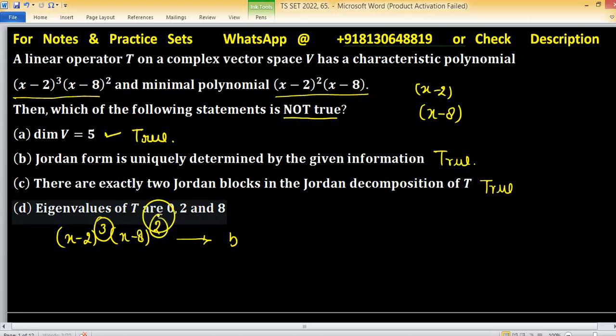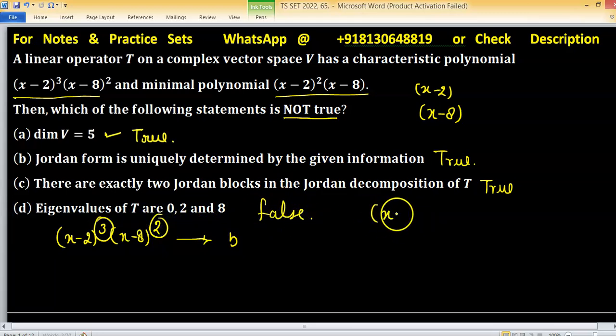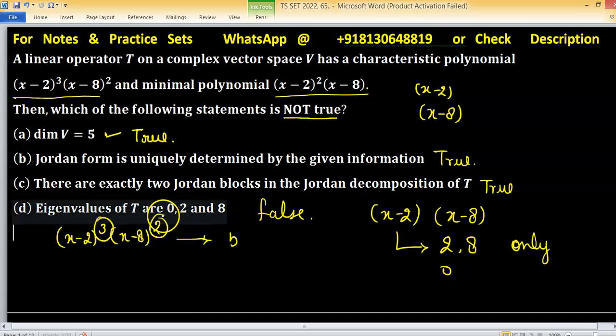Statement (d): Eigenvalues of T are 0, 2, and 8. This statement is false. The reason is that the roots of the characteristic polynomial are 2 and 8 only. Zero is not a root, but this statement says 0 is also an eigenvalue, which is why this statement is false.